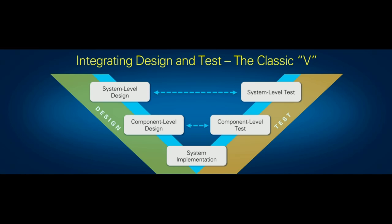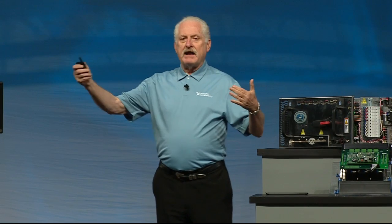For the first time in history, we can have advanced measurements and advanced control in the same system. We also introduced — and I gave a talk at the International Test Conference — the role of the V in our view of design. The V is very conventionally used in areas like automotive and aerospace, where on the left side you talk about system-level and component-level design, moving to detailed design, and then you have a corresponding matching test on the test side. This is a classical way of looking at the design process.